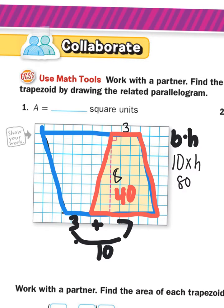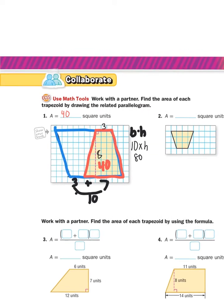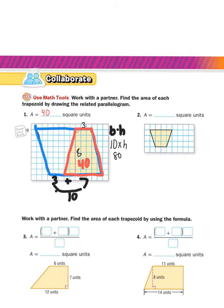For problem two, you're going to take that trapezoid and draw an identical one next to it — remember the top goes on the bottom and the bottom goes on the top. Find the entire base times the entire height to get the area of the parallelogram, cut that in half, and you'll have the area of the trapezoid. If you get stuck, rewind the video and watch number one again.